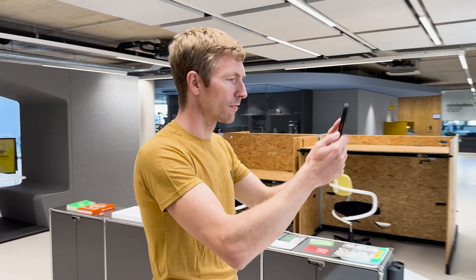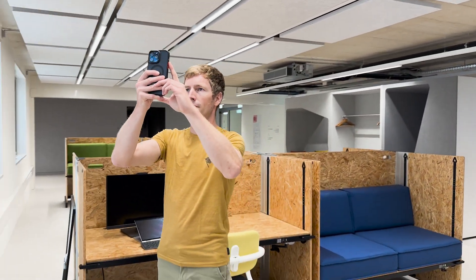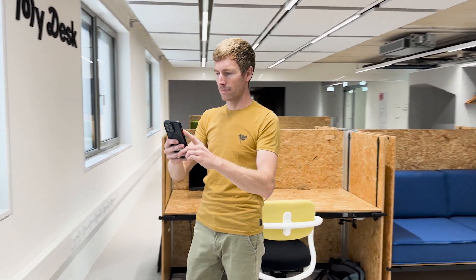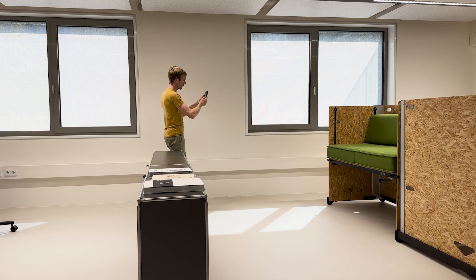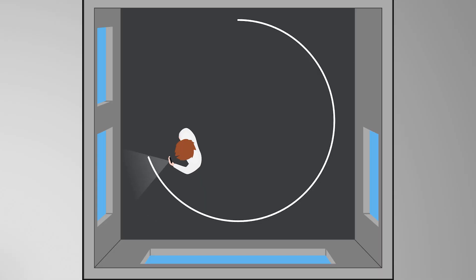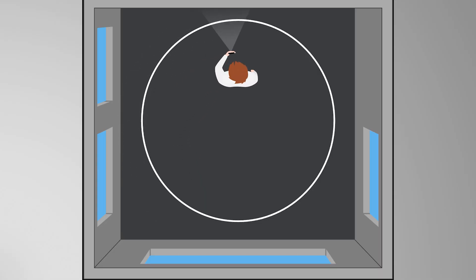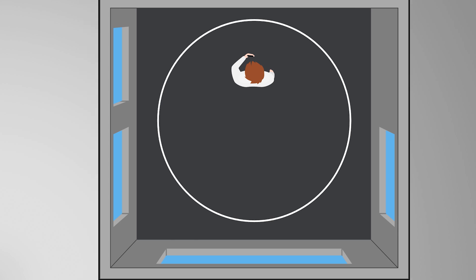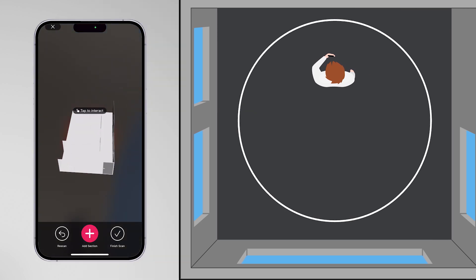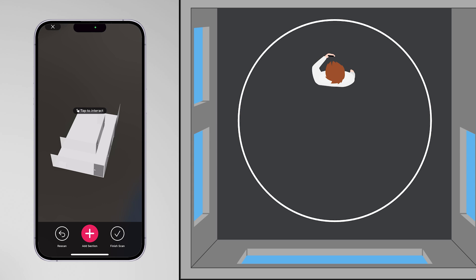If you need to capture more than one room, the best practice is to scan one after the other. You will need to follow the same procedure for scanning a single room by adding different sections for each room. After capturing the first room, review the model, and if you are ready, click the Add Section button.